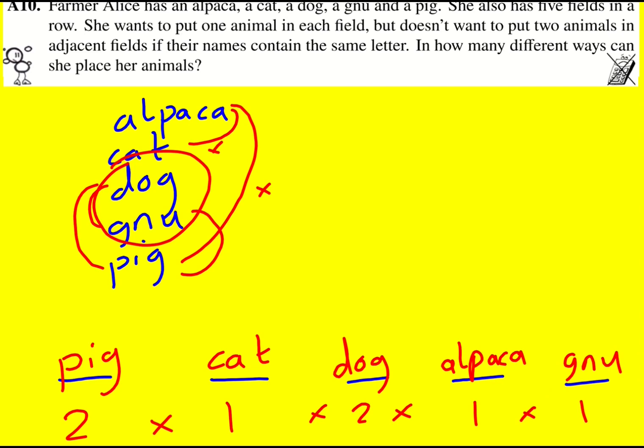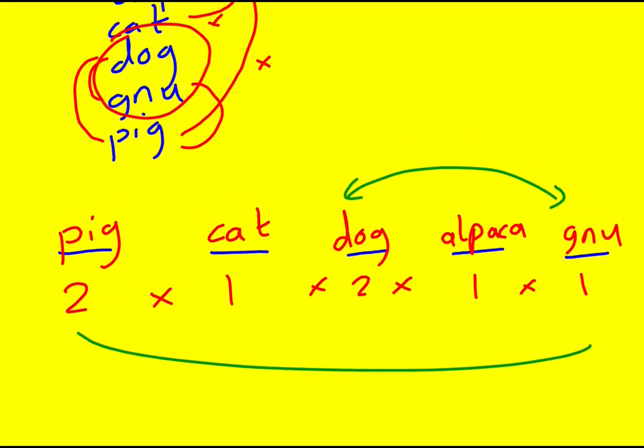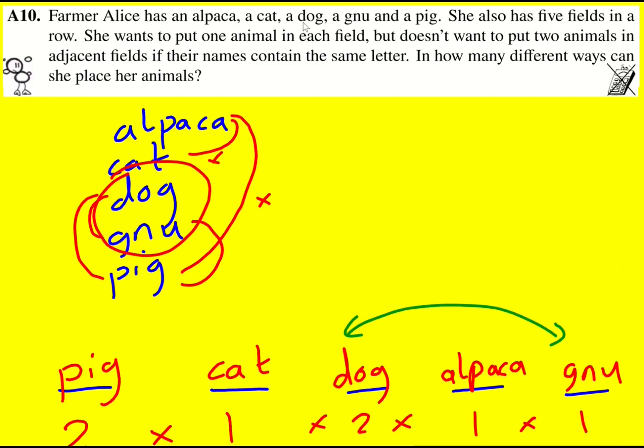So basically I could swap these two around, no problem. Or I could swap the whole lot around and put the pig on the right and basically do like a reflection. So overall, how many different ways are there to place them? There's going to be four.